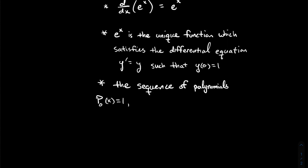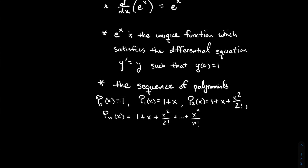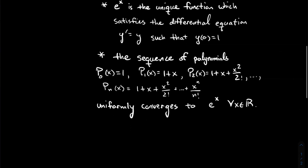The sequence of polynomials of the following form: p₀ = 1, p₁ = 1 + x, p₂ = 1 + x + x²/2!, and the nth one is 1 + x + x²/2! + ⋯ + xⁿ/n! — that sequence of polynomials uniformly converges to e to the x for all real numbers x. That's a real analysis way to talk about where e^x naturally comes from: it is the limit of these polynomials in the uniform norm.